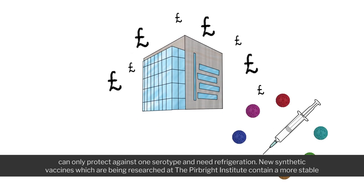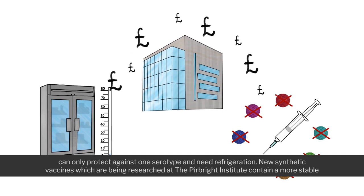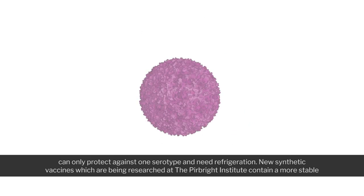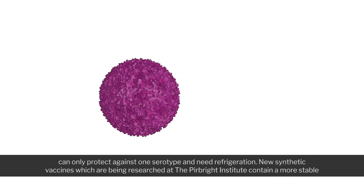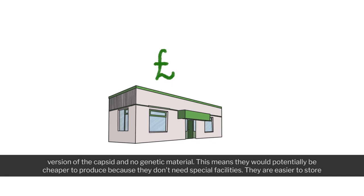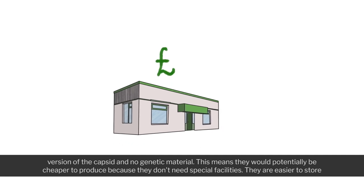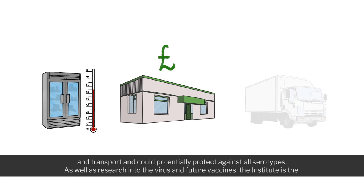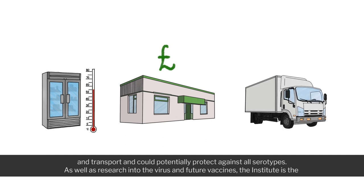Current vaccines can only protect against one serotype and need refrigeration. New synthetic vaccines being researched at the Pirbright Institute contain a more stable version of the capsid and no genetic material. This means they would potentially be cheaper to produce, easier to store and transport, and could potentially protect against all serotypes.